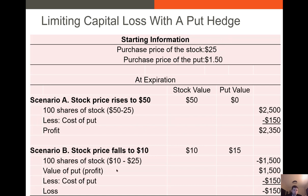In scenario B, the stock price falls from $25 to $10, but we still have the protective put with a strike price of $25. Our potential loss without the put is $25 minus $10 times 100 shares, so minus $1,500. The value of the put is $15 — that's the strike price minus the stock price — so $1,500 on 100 shares. Less the cost of the put, $1.50 times 100 shares, so $150. Grand total, our loss with the put is only $150 instead of $1,500. This is why we use puts — to eliminate or significantly reduce downside risk.